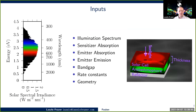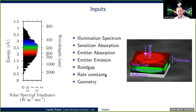Now I'll move on to the computational methods we use to make predictions about device performance. We start with an illumination spectrum — usually the standard solar spectrum, though our software can model alternative illumination. We use the sensitizer absorption from UV-Vis, where it's very important to accurately calibrate the concentration of your sample since we're interested in absorption per molecule. We also include emitter absorption for a more precise answer, and the emitter emission is used to figure out what the photoluminescence looks like. We use the solar cell band gap to determine which photons are captured and which pass through, along with rate constants from time-resolved spectroscopy experiments.